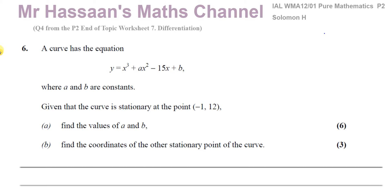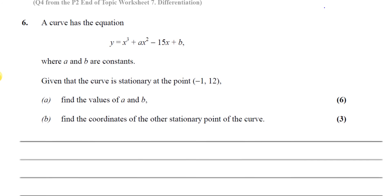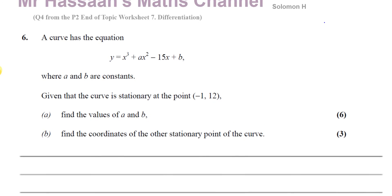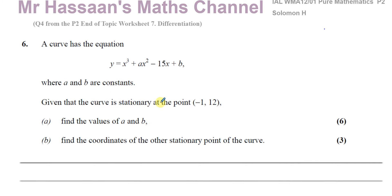A curve has the equation y equals x cubed plus ax squared minus 15x plus b, where a and b are constants. Given that the curve is stationary at the point minus 1, 12, find the values of a and b, and then find the coordinates of the other stationary point on the curve. First of all, we'll use the information that it has a stationary point at the point minus 1, 12.